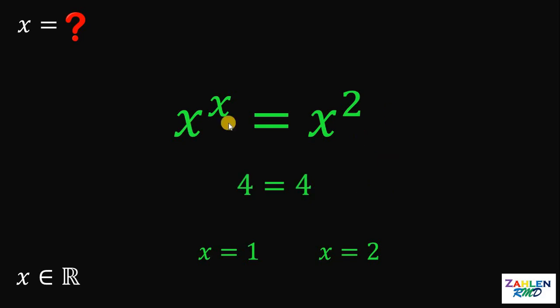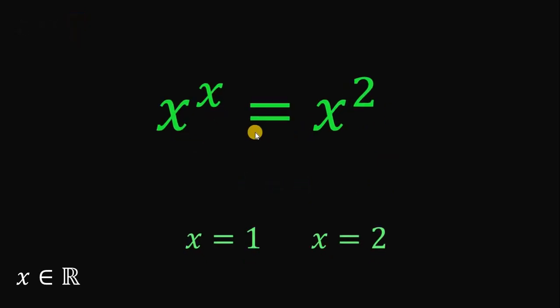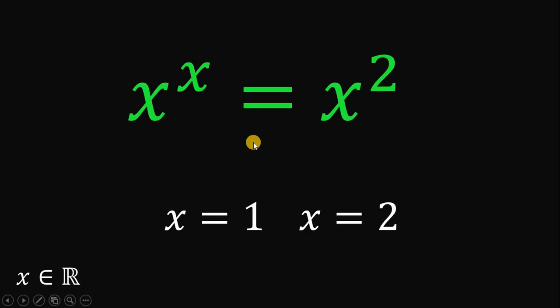Therefore, we can say, given this equation x raised to x equals x squared, the only possible solutions must be x equals 1 and x equals 2. And, as always, we are done.